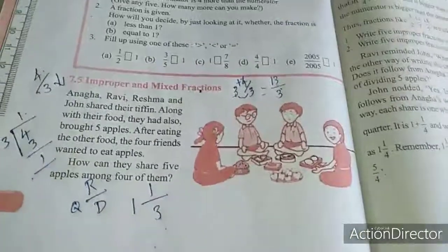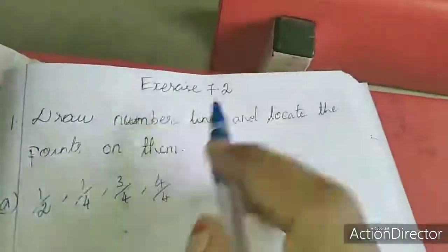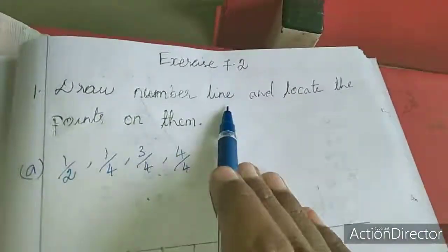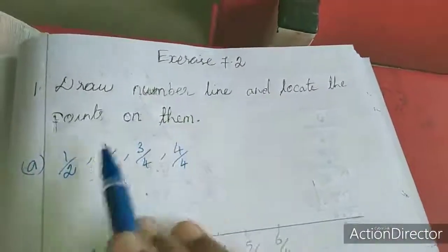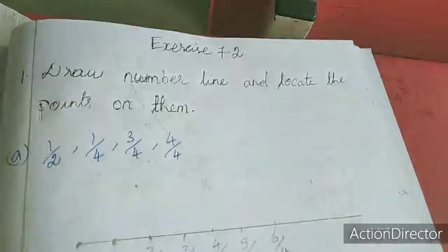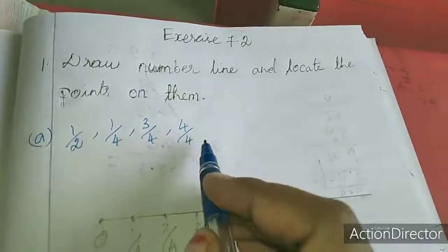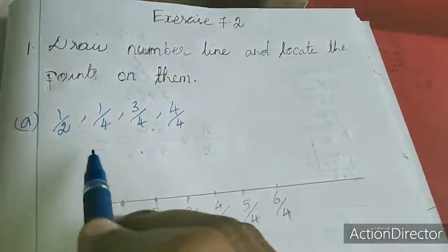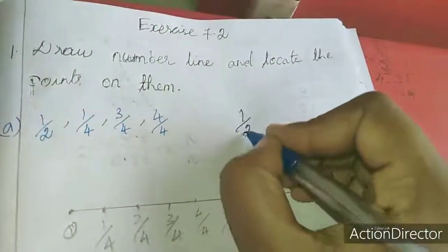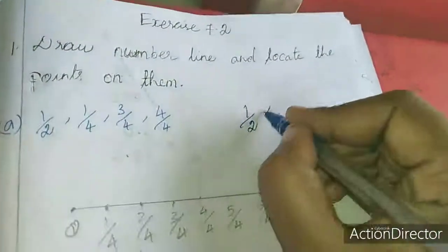Now we will move to the exercise 7.2. First, draw a number line and locate the points on them. The denominator tells us into how many equal parts to divide each unit on the number line.